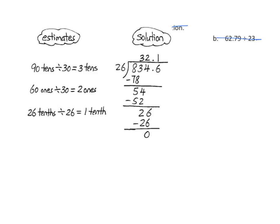The first thing we look at is the 8 in the 100s place. We can't work with the 8 in the 26 because this 8 in the 100s place — or we could say 8 hundreds — is greater than 26. So we're going to decompose my 8 hundreds to 80 tens plus 3 tens, and we have 83 tens.